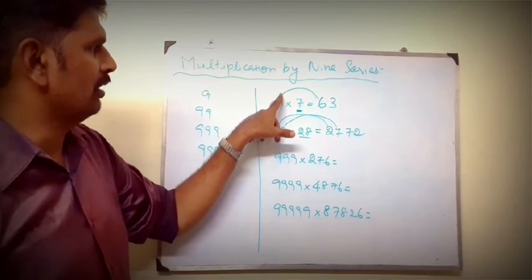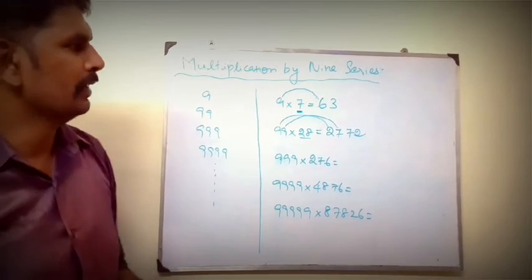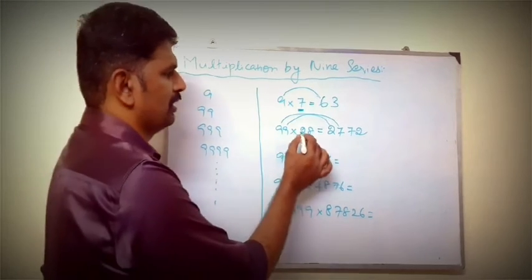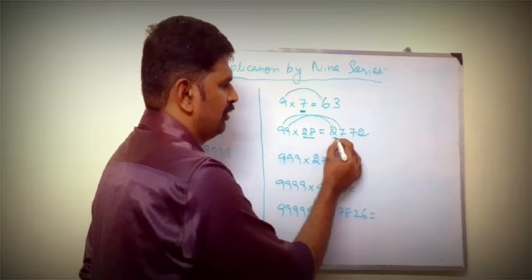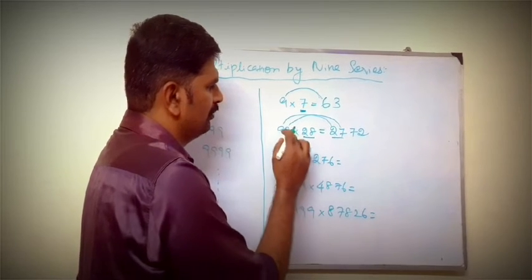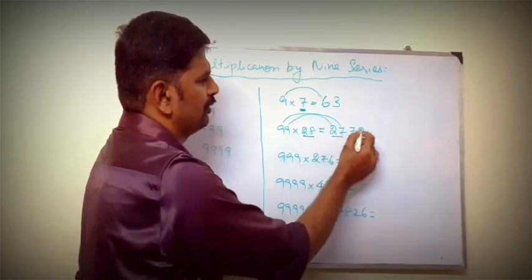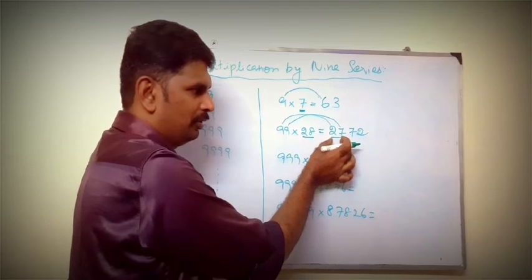Nine series rule: subtract. 9 minus 6 is 3. 99 is the double-digit number. 2-digit number is 28. Result is 2772. 9 minus 2 is 7, 9 minus 7 is 2. 2-digit number is 2772.